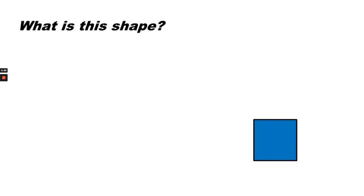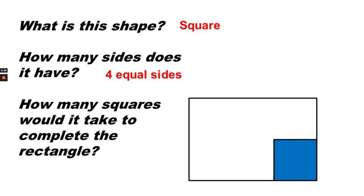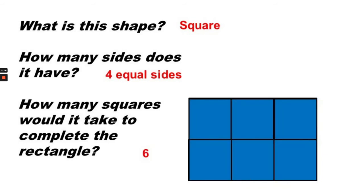What is this shape? A square. How many sides does it have? A square has four equal sides. How many squares would it take to complete the rectangle? It would take six squares to complete the rectangle.